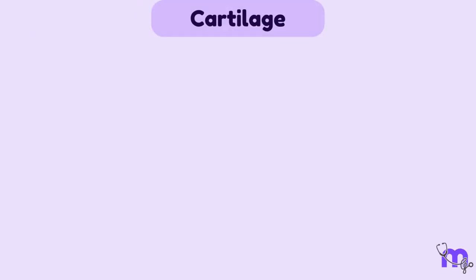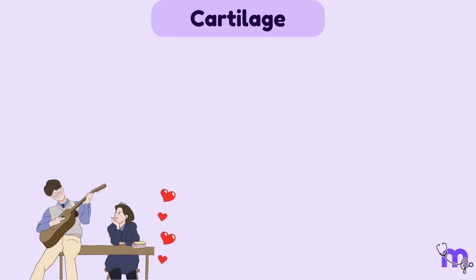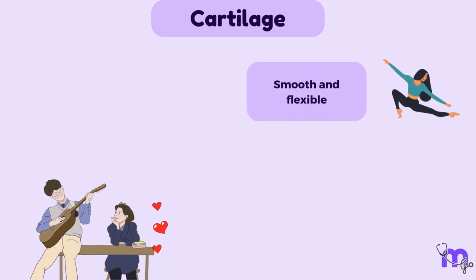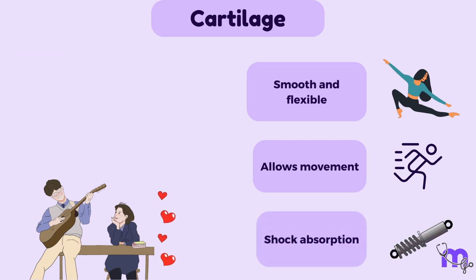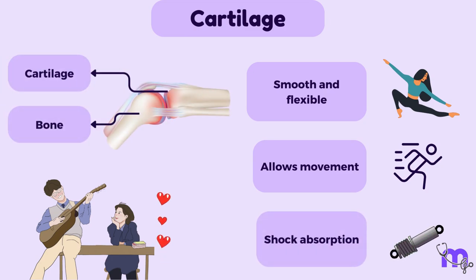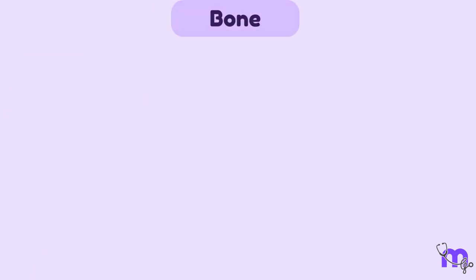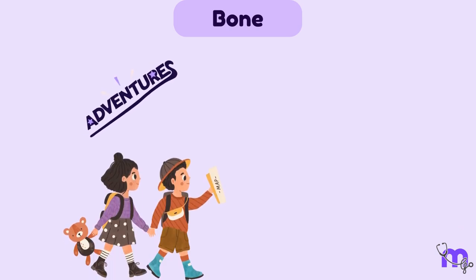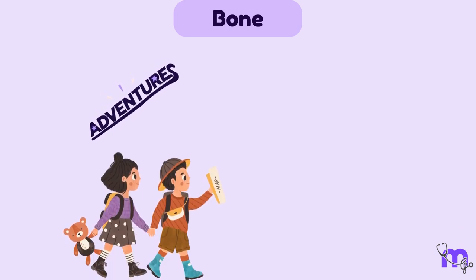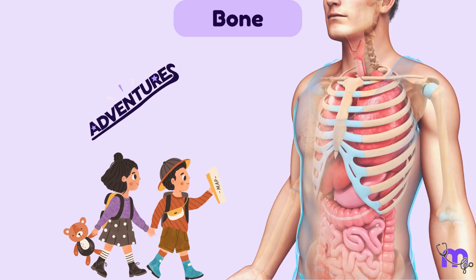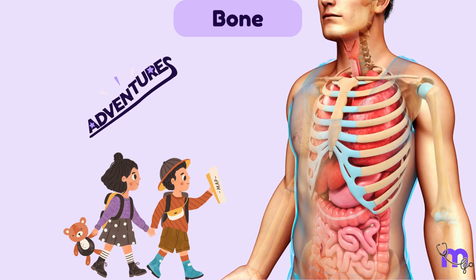Cartilage is like a beautiful old-school romance — it is smooth and flexible, allowing for movement and shock absorption between the bones. Bone can be compared to a classic adventure, providing a rigid and strong system to support and protect the body's vital organs and soft tissue.